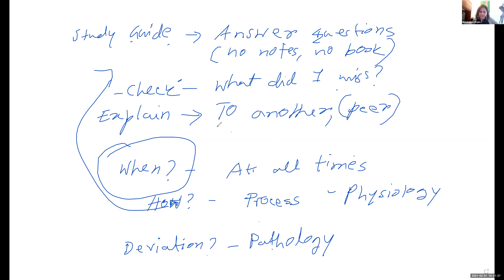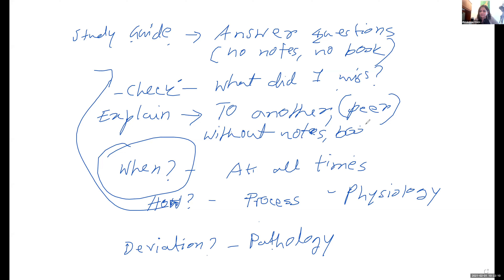I've had students say 'I explained it to my boyfriend' or 'my girlfriend' and they said I did fantastic. My response is: what do you expect them to say? Is your significant other going to say 'I didn't understand a thing'? Your peer — someone else who understands what you are talking about, not your family members — is who you should be explaining to, without notes, books, or any other media. If you can do that, you have understood. This is what we call complete learning.